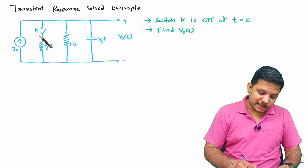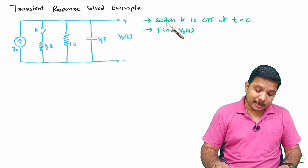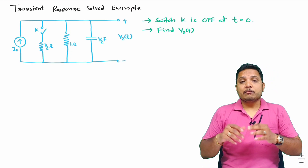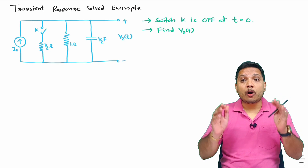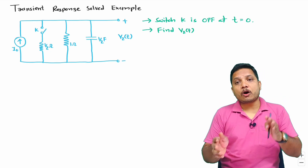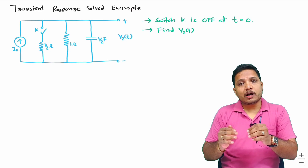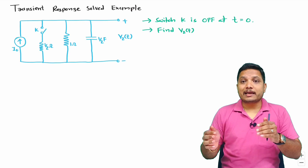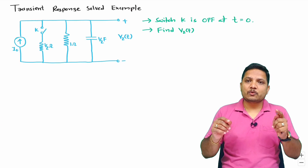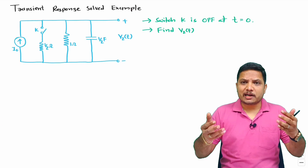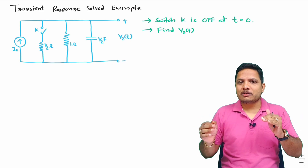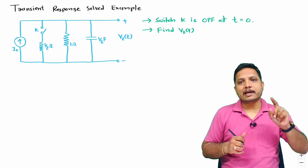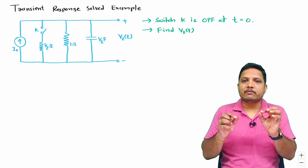In this circuit, we have switch K. It has been given that switch K is off at t equals 0. What it means is that before t equals 0, the switch is on. So switch was on before t equals 0, and after that it is getting off. There is a trick in this question — students often assume switch is off initially then on, but you should read carefully: initially switch is on, and at t equals 0 it is getting off.